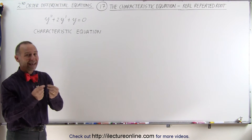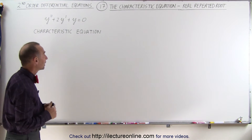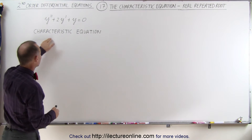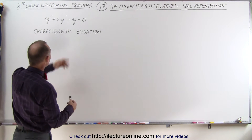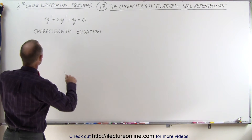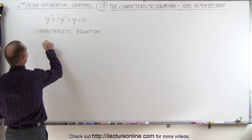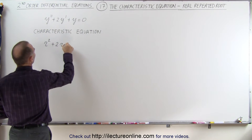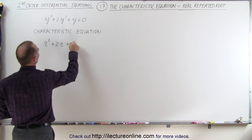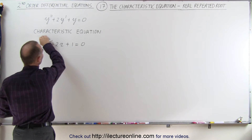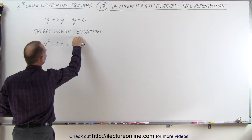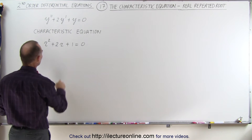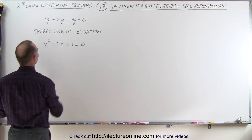In other words, the two roots are exactly the same. Here's an example of that. Let's find the characteristic equation and solve it and see what we get. This becomes r squared plus 2 times r plus 1 equals 0. This is the characteristic equation — it looks just like a quadratic equation but we use r instead of x.